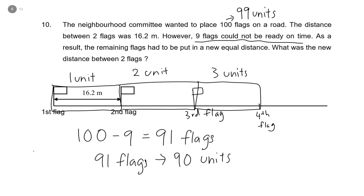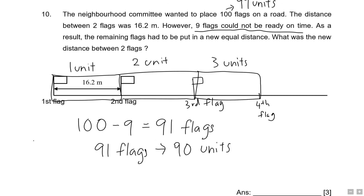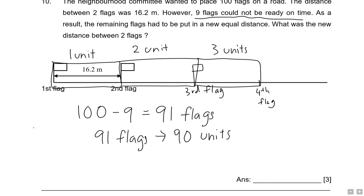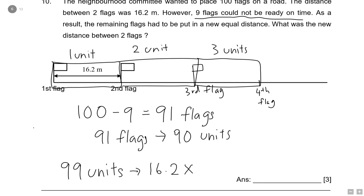We know one unit is 16.2 meters. They were supposed to place 100 flags across the whole road, so the total road distance = 99 units × 16.2 meters = 1,603.8 meters. This is the distance of the whole road.